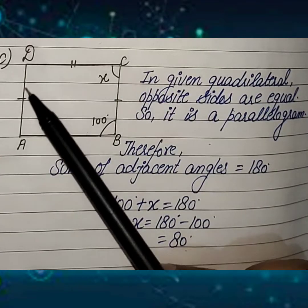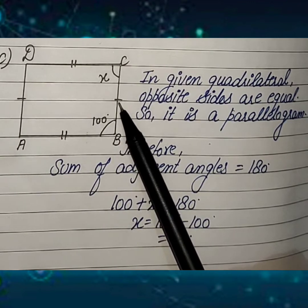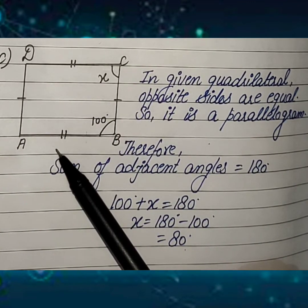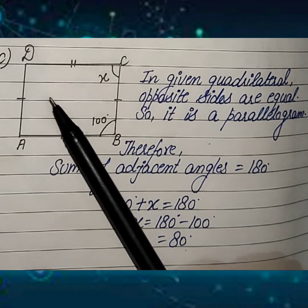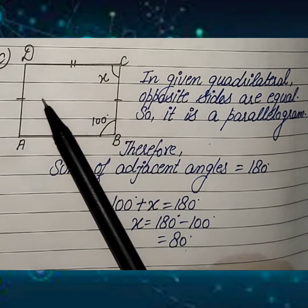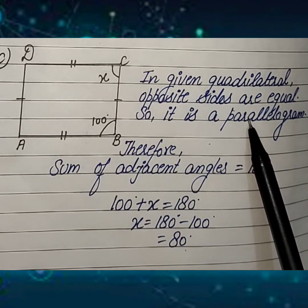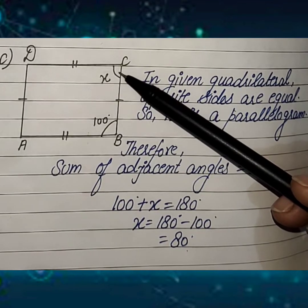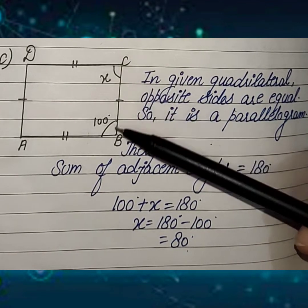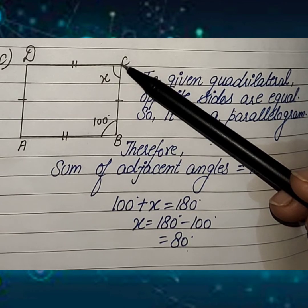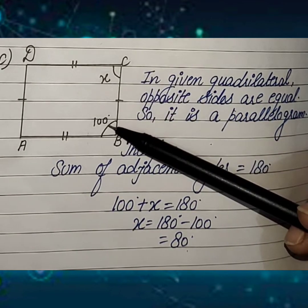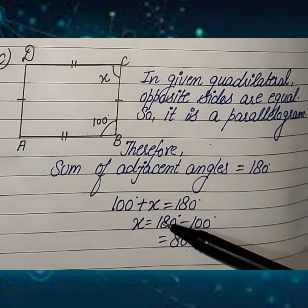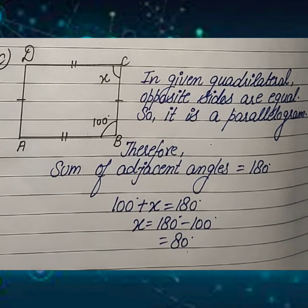Next, this is also a type of quadrilateral, but in this quadrilateral opposite sides are equal — aamne saamne ki sides equal hai. So this will be a parallelogram. A quadrilateral in which opposite sides are equal is called a parallelogram. And we know in a parallelogram, the sum of adjacent angles is always 180 degrees — agal bagal wale angles ka sum 180 degree hota hai. That's why we can write 100 degrees plus x equals 180 degrees, which gives the value of x as 80 degrees.